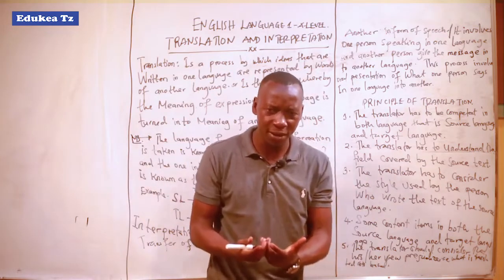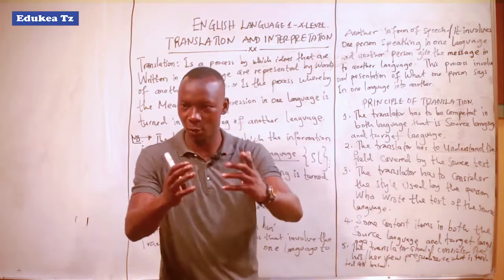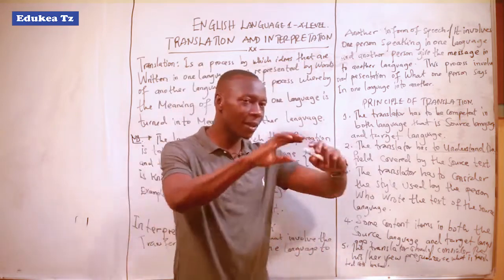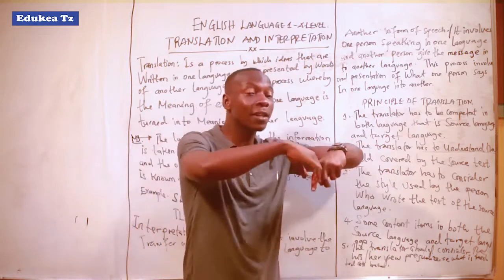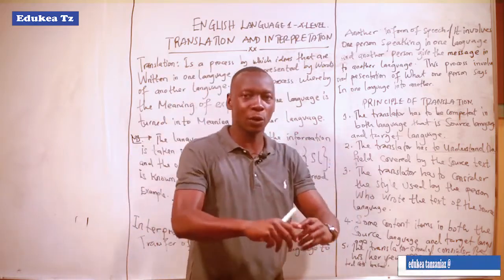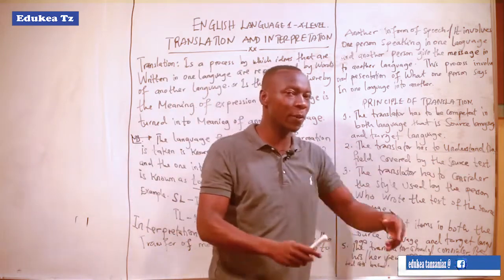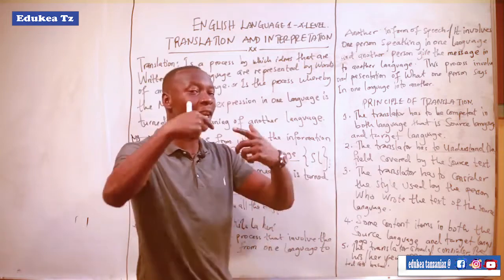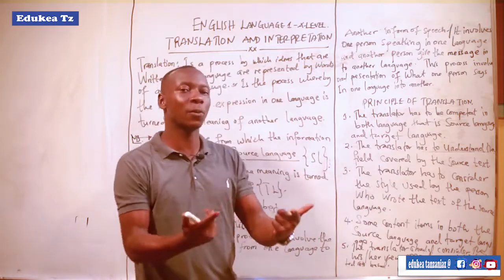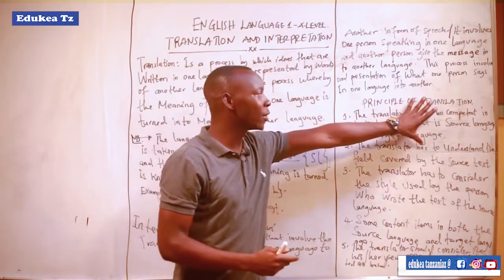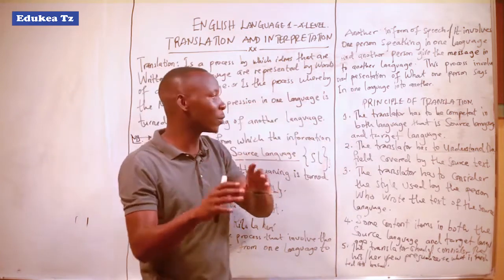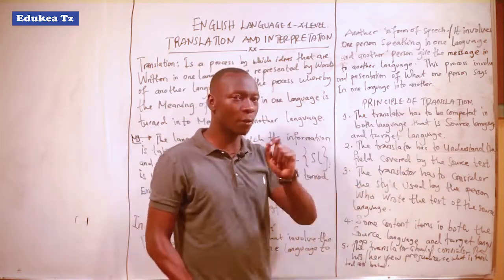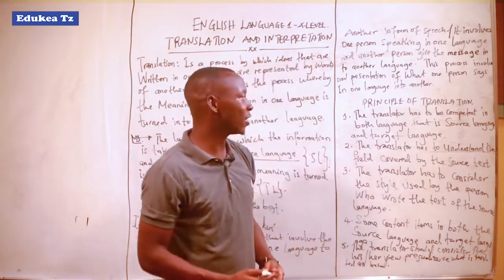When you are familiar with and capable of understanding both the source language and the target language, you will become a good translator. The language spoken by the first speaker is the source language, and the language spoken by the interpreter is the target language, because the translator will translate the language from the first speaker to the audience who are listening, so they can understand what has been spoken. Being competent means you have both competence and performance.